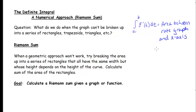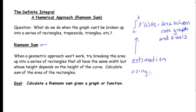This alternate method is called a Riemann sum. What we're going to do is break up the area into a series of rectangles that all have the same width but whose height depends on the height of the curve. We calculate the sum of the areas of these rectangles, and this gives us an approximation for the definite integral. We're estimating the area between the rate graph and the x-axis by finding the area of rectangles, adding them all up.